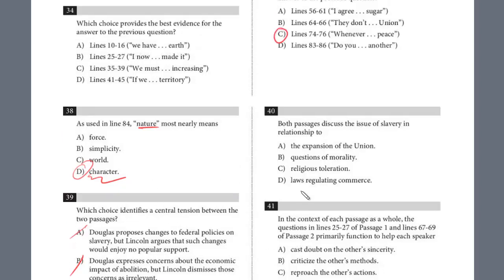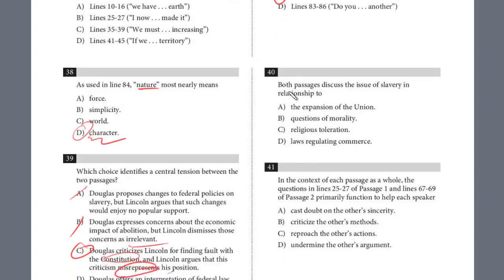Now for the last two — these are just compare and contrast questions. Number 40: what do they both discuss? This is not specific because we know they have differences of opinion, but what do they have in common? It's always going to be a very broad answer. They both discuss slavery and the expansion of the union. Douglas is arguing why can't we continue this — the expansion of the union has prospered. And Lincoln is stating that the current status is fine, but the expansion is where there is all this dissension and dispute. The answer is A.